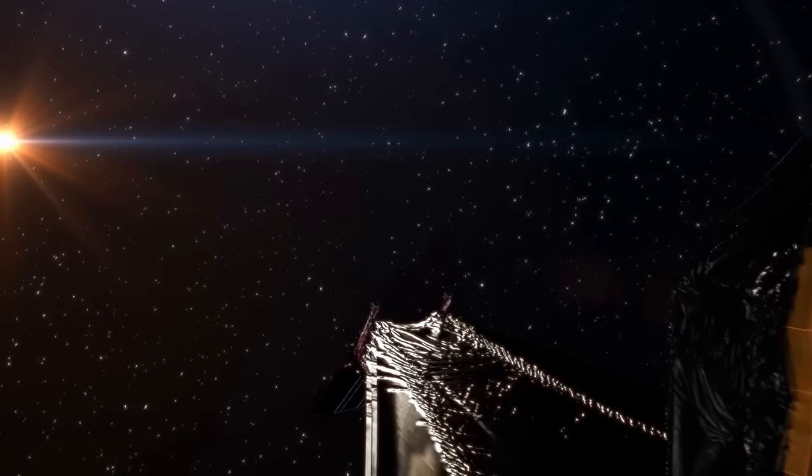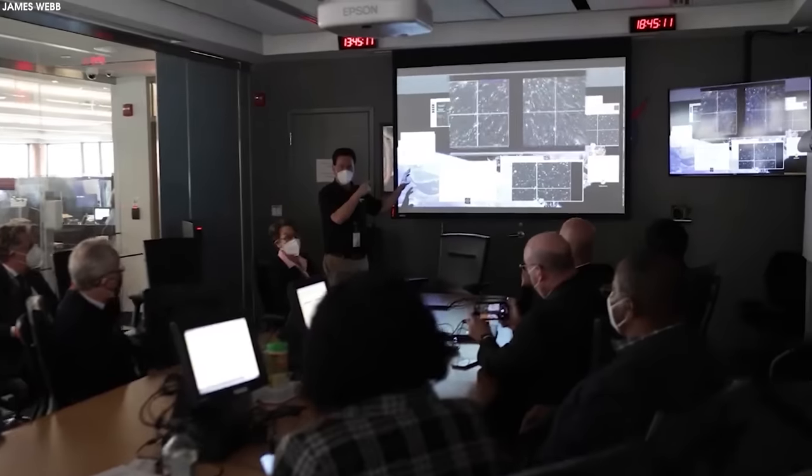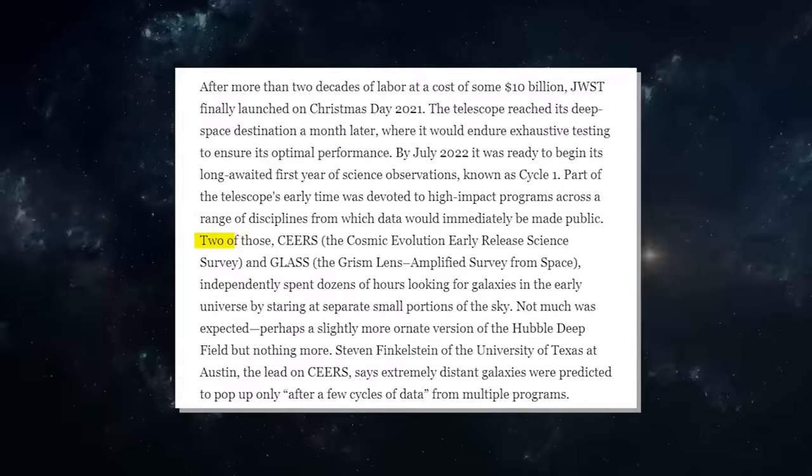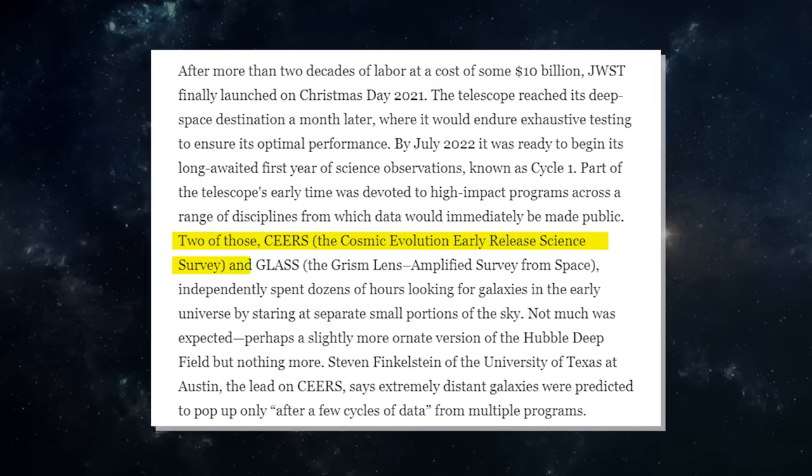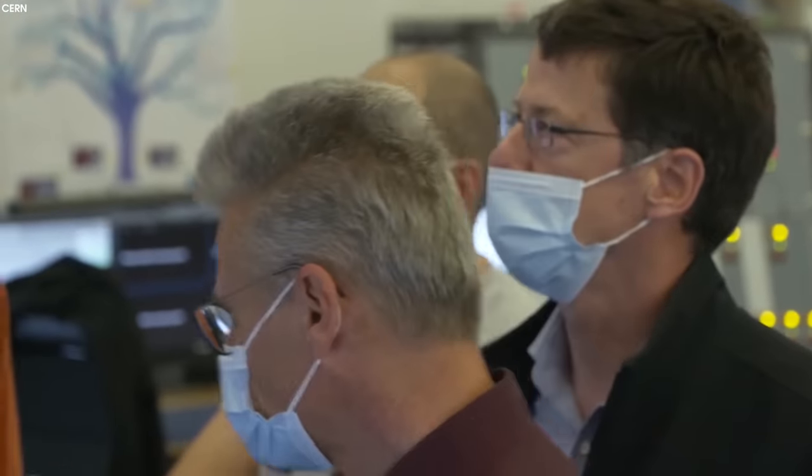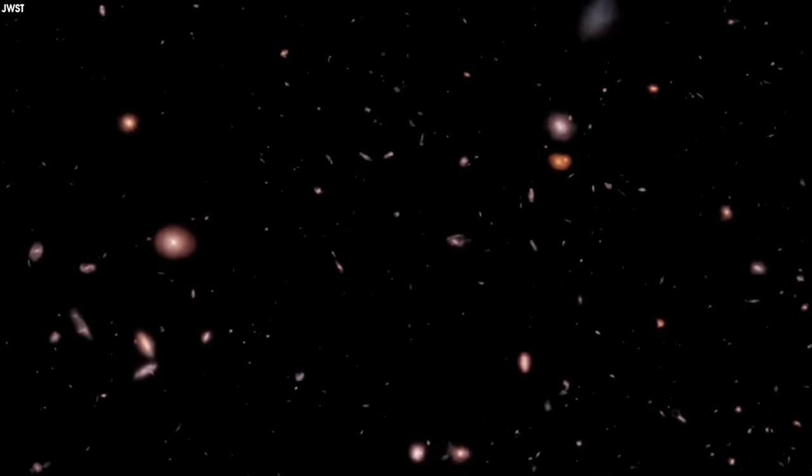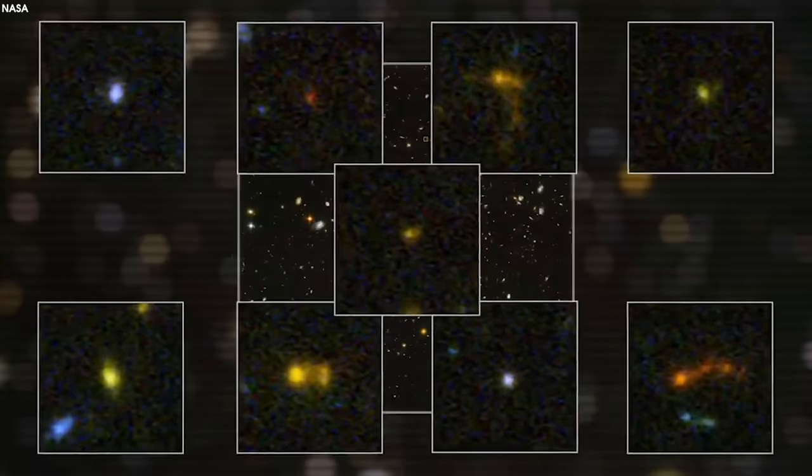Part of the telescope's early time was devoted to high-impact programs across a range of disciplines. Two of those, SEARS and GLASS, independently spent dozens of hours looking at galaxies in the early universe. Not much was expected, perhaps a slightly more ornate version of the Hubble Deep Field, but nothing more.